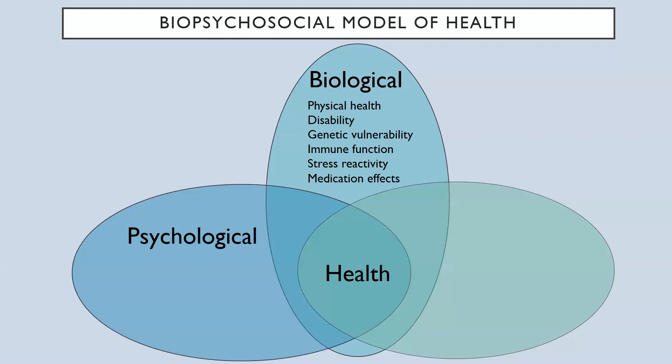Psychological health has to do with our thoughts, emotions, attitudes, and some behaviors associated with those. Examples include learning and memory, fear and avoidance beliefs, personality, coping skills, and psychological distress. Although we may tend to think about successful aging along these lines, distinguishing successful aging as mostly a physical or mental aspect of our being is incomplete. A third and critical component of successful aging has to do with our social life and well-being.